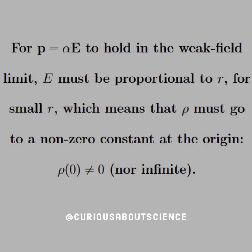Thus, for p = αE to hold in the weak field limit, E must be proportional to r, not r², for small r, which means that ρ must go to a non-zero constant at the origin. Note that ρ(0) cannot equal 0, otherwise we'll blow up.